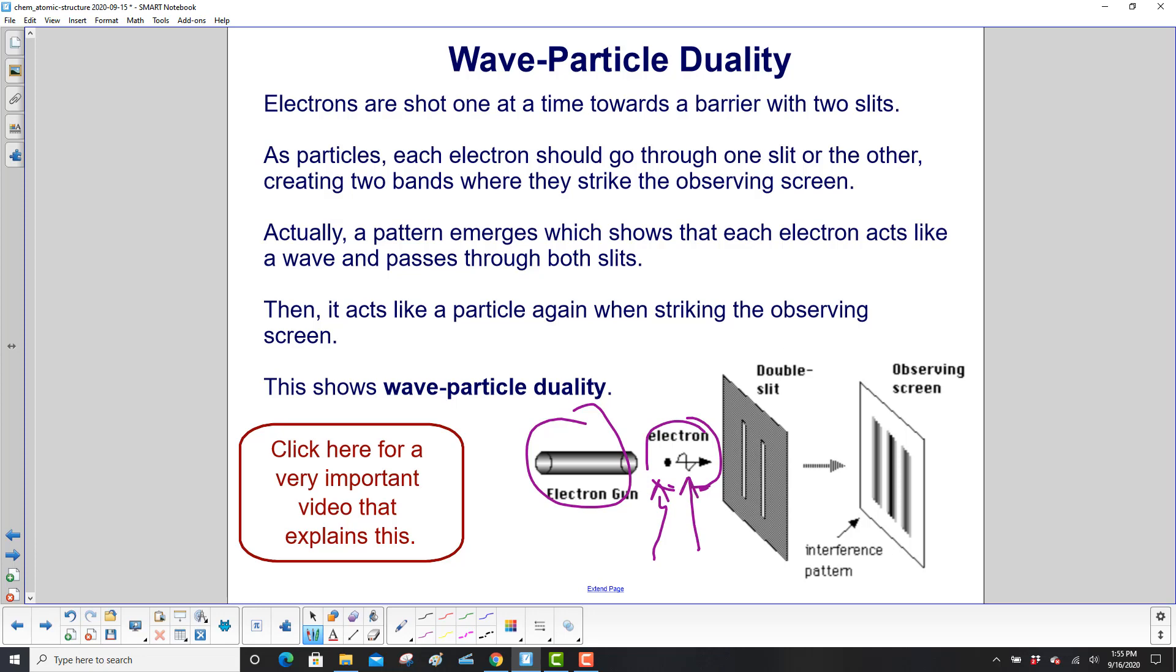The barrier here has two slits, double slit. As particles, each electron should go through one slit or the other, creating two bands where they should strike the observing screen.